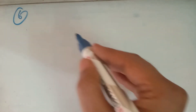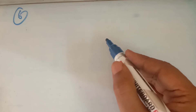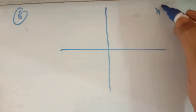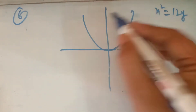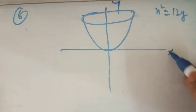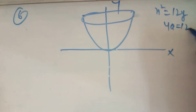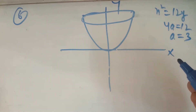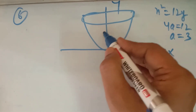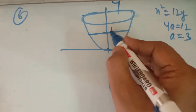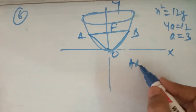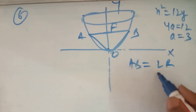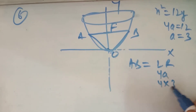Now question number 6: find the area of the triangle formed by the line joining the vertex of the parabola X² = 12Y — it is a vertical parabola where 4A = 12, so A = 3. Find the area of the triangle formed by the line joining the vertex and the latus rectum. The latus rectum passes through the focus; its length = 4A = 12.